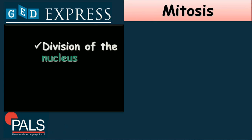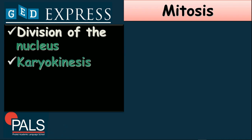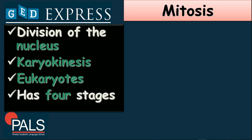We start with the definition of mitosis. Based on what was discussed last time, mitosis is preceded after the interphase stage on the cell cycle. Mitosis is the division of the nucleus of the cell, and this is also known as karyokinesis. This is done by eukaryotic cells, and it has four stages, which will be enumerated later on.